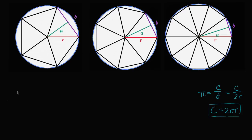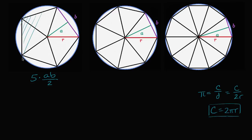To think about that, we're going to approximate the areas of polygons inscribed in a circle. Over here I have this five-sided polygon. Its area is going to be five times the area of each of those triangles. The area of each triangle — with height a and base b — is ab over two. So the total is five times ab over two. This is only the inscribed polygon, so we're definitely underestimating the area of the circle — leaving out all these little chunks outside the polygon but still inside the circle.